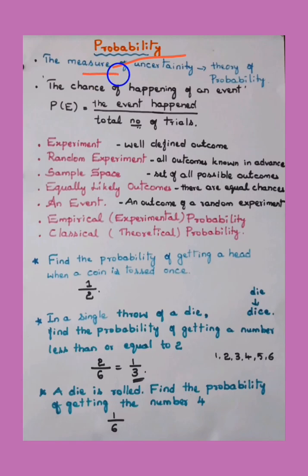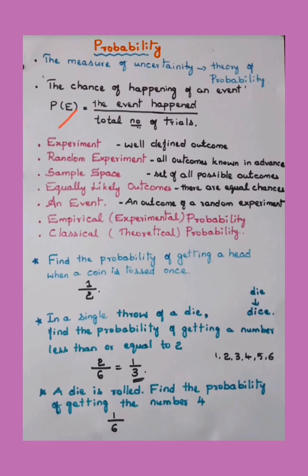Let's move into the topic. Probability is a measurement of uncertainty — that is the theory of probability. When we say about probability, it's a chance of happening of an event. The formula is: P(E) = number of times the event happened divided by total number of trials. Before moving to the sums, let us check out a few important terms related to probability.